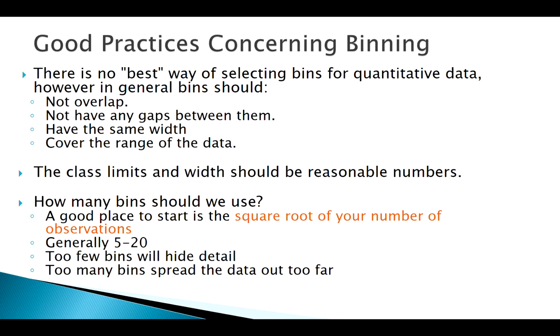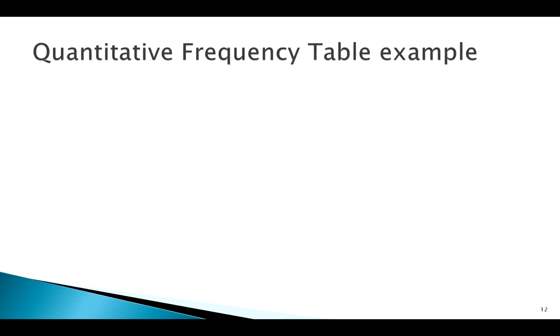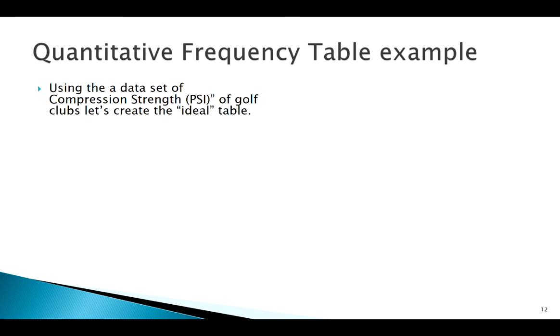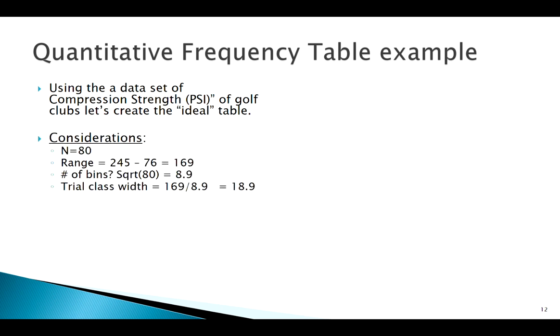So we'll quickly here look at a frequency table from a data set, and this is about the compression strength of a group of golf clubs. So before we do anything, we always want to think about all these ideas: I've got to cover my range, I've got to do all this. So we want to think about, how many observations do I have? Well, we have 80 golf clubs here. My max PSI here was 245, my minimum was 76, therefore I had a range of 169. Hopefully you're familiar with how to find the range of a data set.